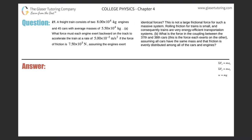Number 27. A freight train consists of two 8×10⁴ kilogram engines and 45 cars with average masses of 5.5×10⁴ kilograms. Part A: What force must each engine exert backward on the track to accelerate the train at a rate of 5×10⁻² meters per second squared if the force of friction is 7.5×10⁵ newtons? Assuming the engines exert identical forces.